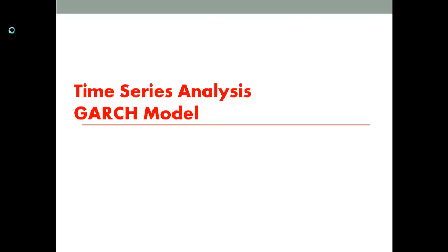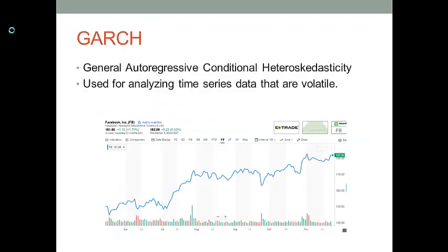Let's talk about the GARCH model. The full name of GARCH is General Autoregressive Conditional Heteroscedasticity. This model can be used to analyze time series data that are volatile, for example, stock prices.